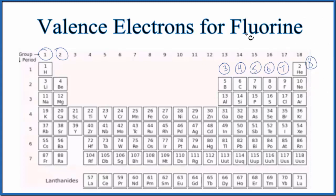The first is just to look at the periodic table here. So here's fluorine right here. It's in group 17, sometimes called 7A.